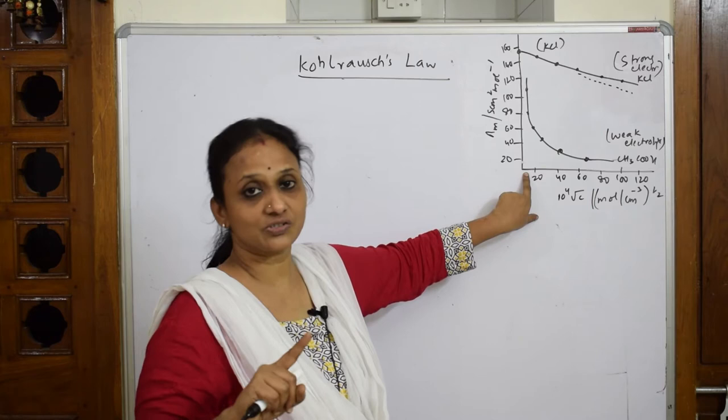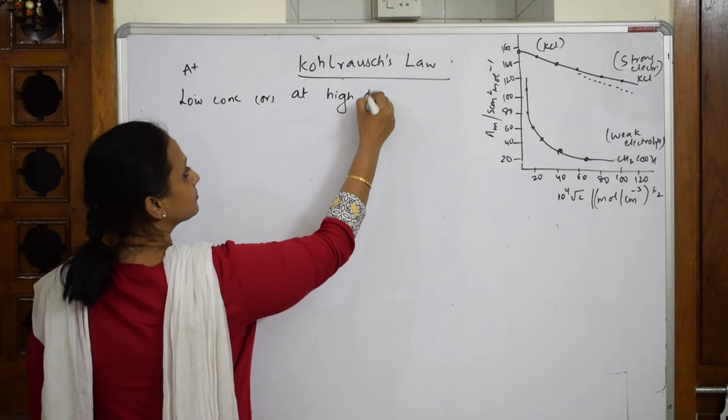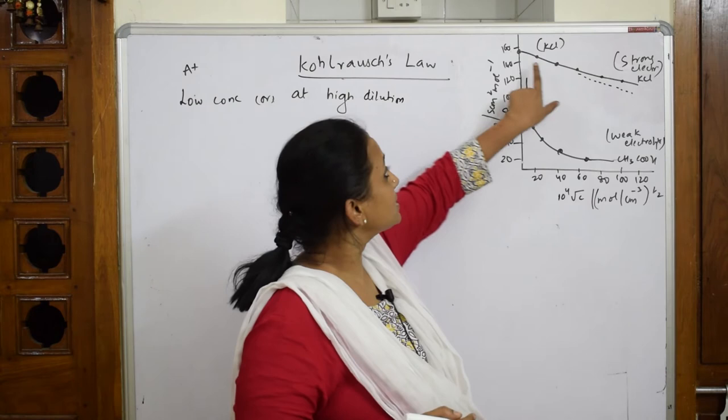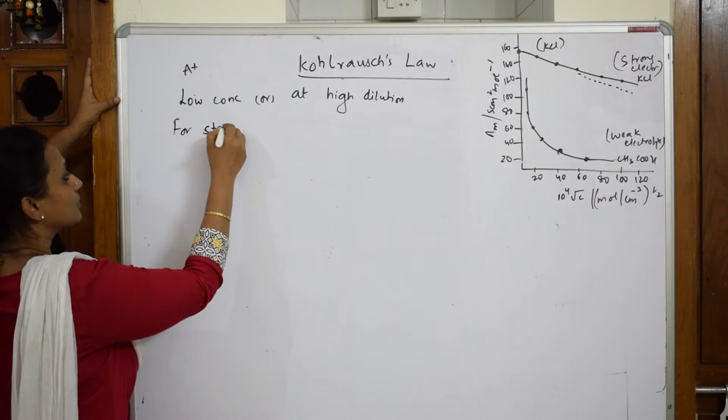At low concentrations or at high dilutions, what are we observing? In the case of the strong electrolyte, we observe that the molar conductivity is very, very high — at high dilution the molar conductivity is very high for strong electrolytes. That is, λm is very high.